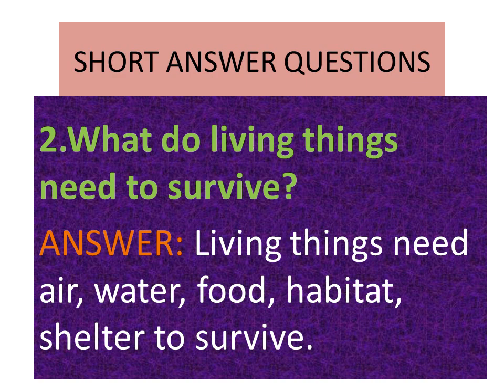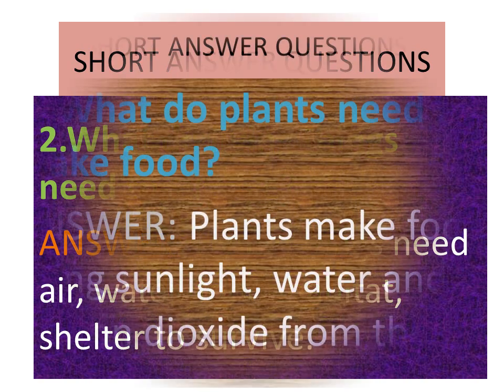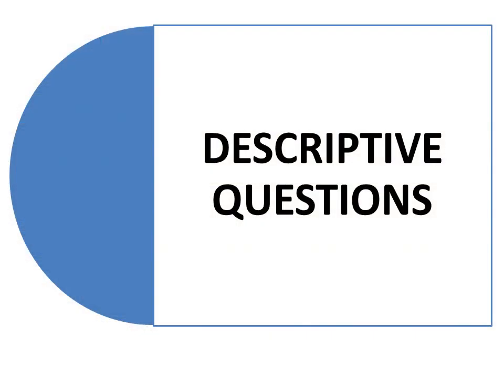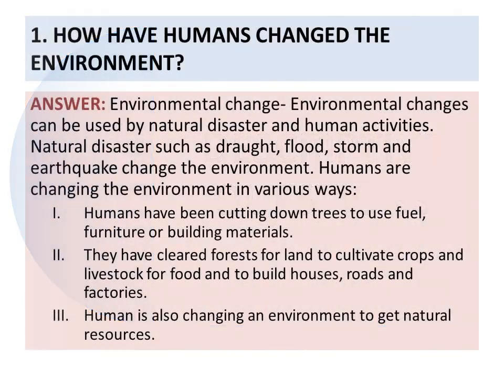Question three: What do plants need to make food? Answer: Plants make food using sunlight, water, and carbon dioxide from the air. Then we will learn descriptive questions, number one.